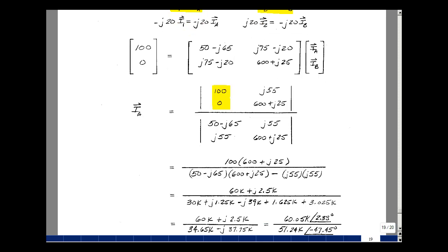Let's solve for I sub A using Kramer's rule. Bring this from the left-hand side of the equation into column A, so 100 and 0, and I've got these two added together, which is J 55, and then I've got 600 plus J 25, and then divided by this determinant. So I've got the same terms here, but this added to this is a J 55, and then likewise over here, and then 600 plus J 25.